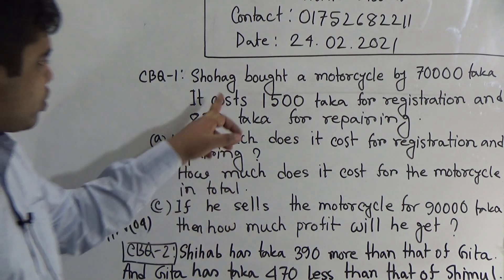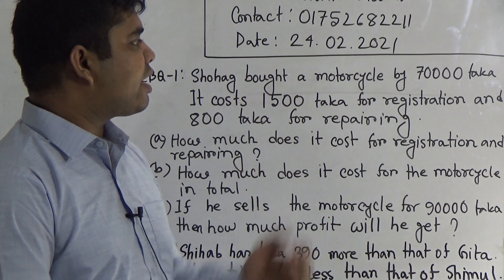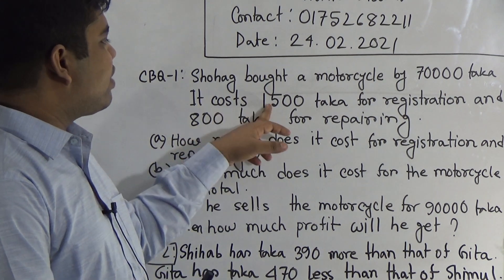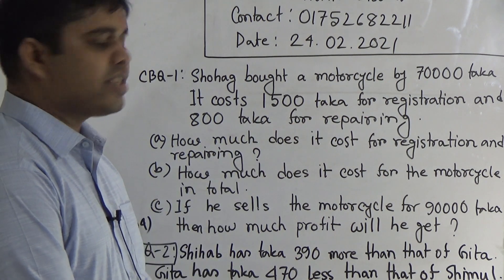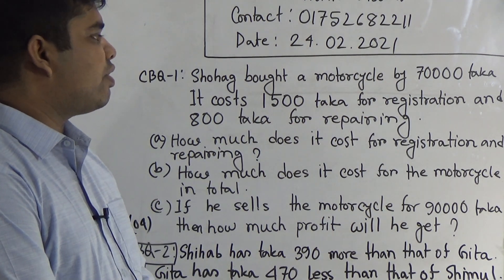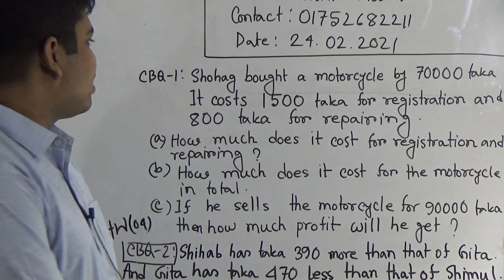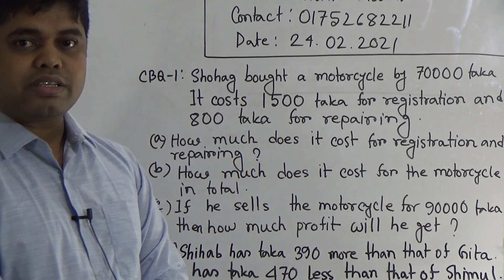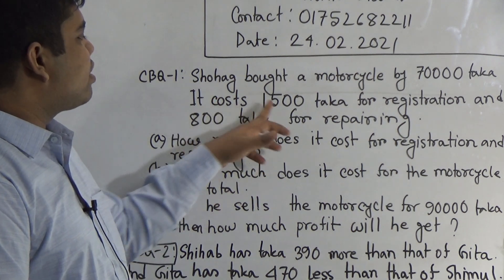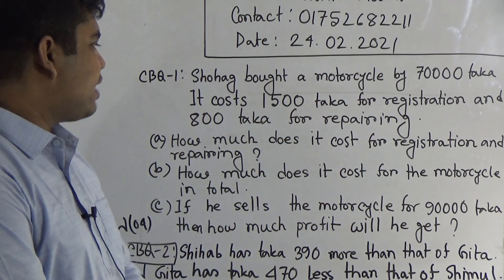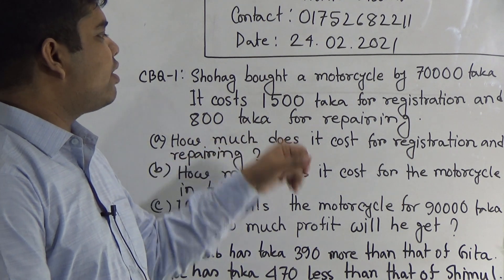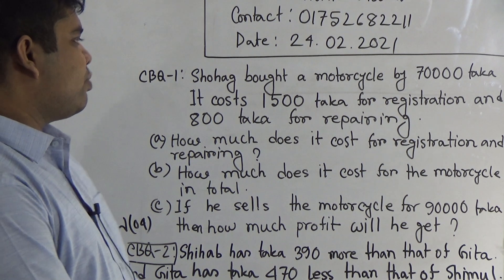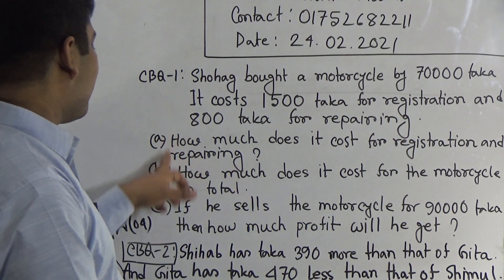CBQ number 1 is: Shohag bought a motorcycle for 70,000 Taka. It cost 1,500 Taka for registration and 800 Taka for repairing. This is the stem. By using this stem, we shall solve question number A, B, and C.